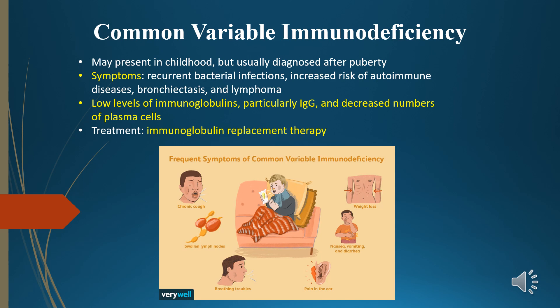Lab findings show low levels of immunoglobulins, particularly IgG, and decreased numbers of plasma cells. Treatment consists of immunoglobulin replacement therapy.